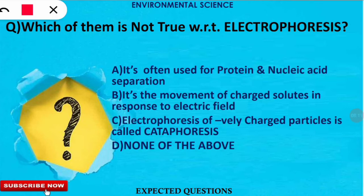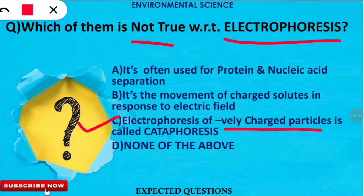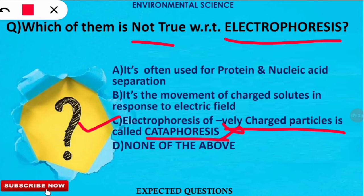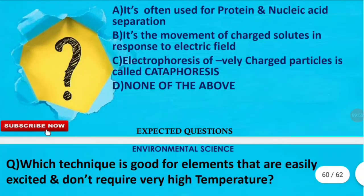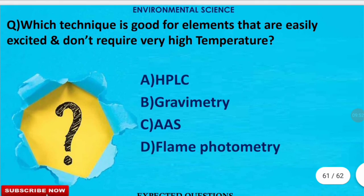The next question asks which statement is not true with respect to electrophoresis. The correct option is C. Electrophoresis of negatively charged particles is not called cataphoresis — it is called anaphoresis, because negatively charged particles are anions. Cataphoresis refers to the electrophoresis of positively charged particles, which are cations.